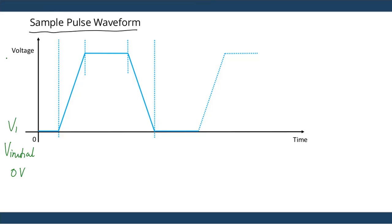The next parameter is called V2 or V-on, also known as the on voltage. You can set it to any value of your choice — in this case, just as an example, we'll set it to five volts.